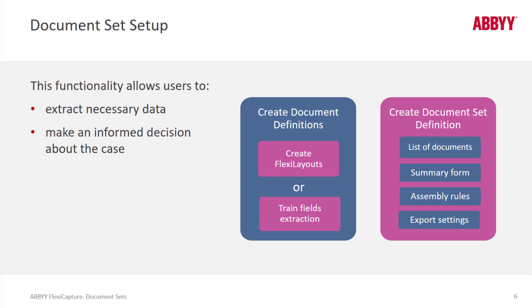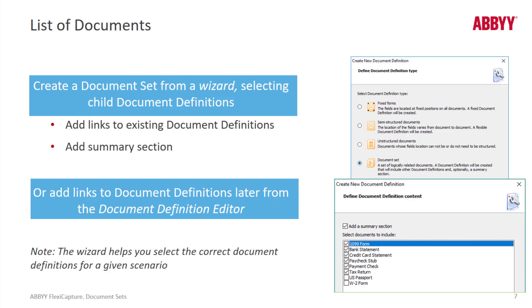In the document set, we list the document definitions that should be included, and we can create a summary form that allows a verifier to easily perform cross validations. We can put in assembly rules and set up export settings. The document definition wizard allows us to select a document set, and then we can add links to existing document definitions and add a summary section.